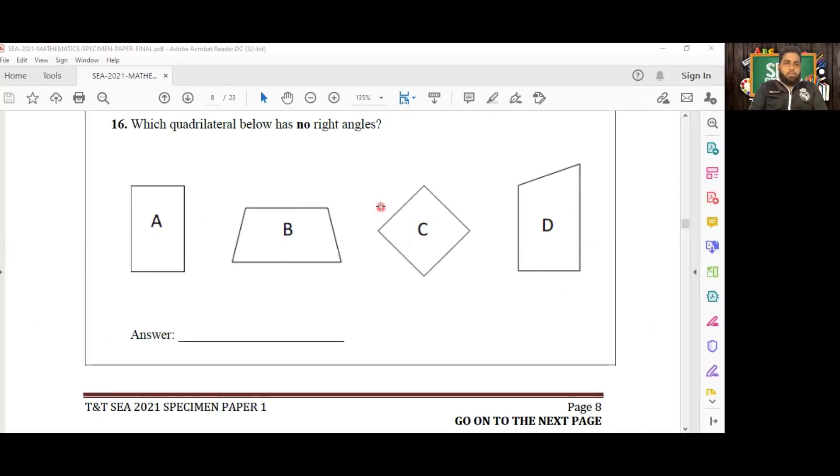Okay guys, so we move down here to number 16 now which reads which quadrilateral below has no right angles. So a quadrilateral is a four-sided closed figure and we have four of them here.